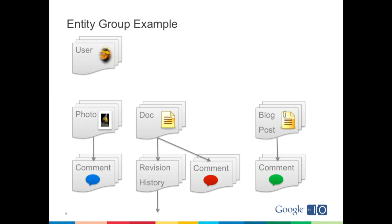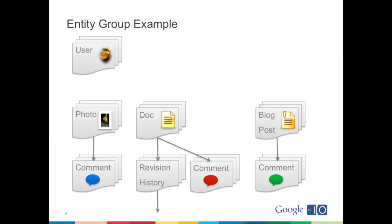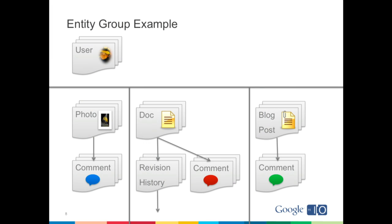Here's an example of entities arranged in a parent-child relationship. We have users, photos, and child entities under photos for comments — the photo owns those comments. We also have documents with revision history and comments, and a blog post with pictures and comments on those as well. Looking at the entity group boundaries, you can operate on the revision history of a document atomically. But if you want to change a photo and a document at the same time, you have to perform two separate transactions.